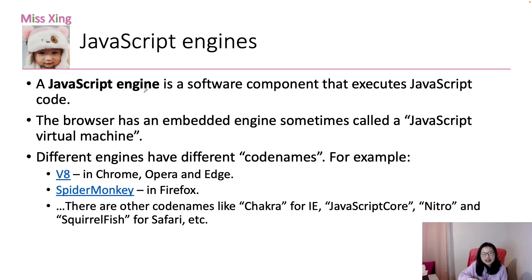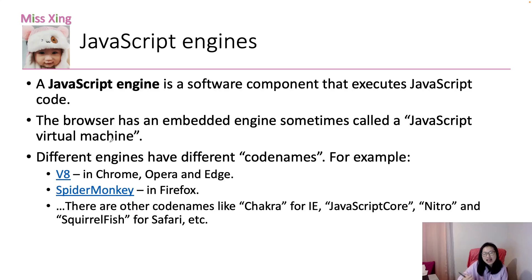A JavaScript engine is a software component — a piece of program — that executes JavaScript code. Whatever you define: a variable, a function call, a method call — this engine executes your code. Browsers like Chrome, Firefox, and Microsoft Edge have an embedded engine, sometimes called a JavaScript virtual machine. Every modern browser has a JavaScript engine, but they are different across browsers.